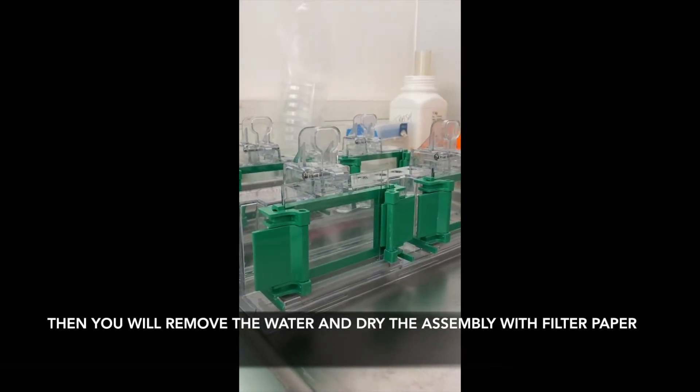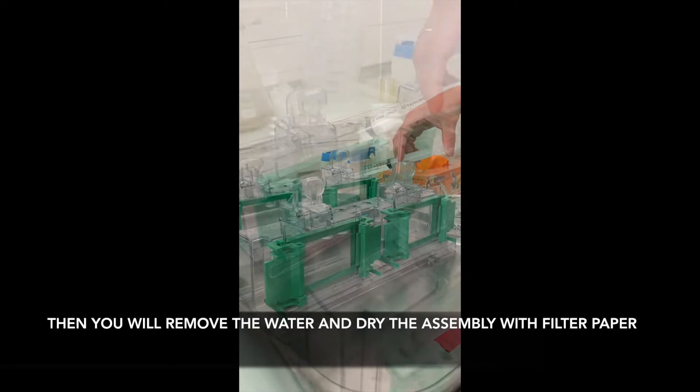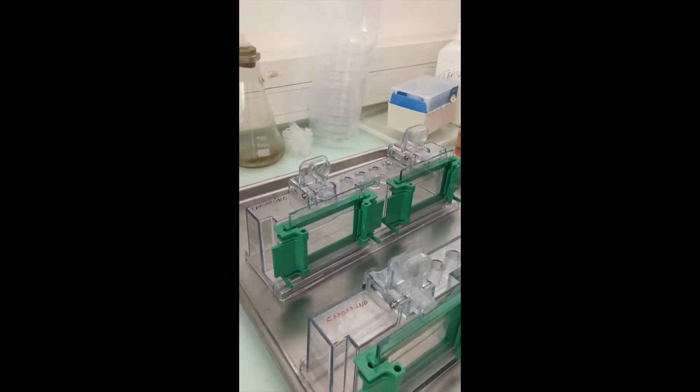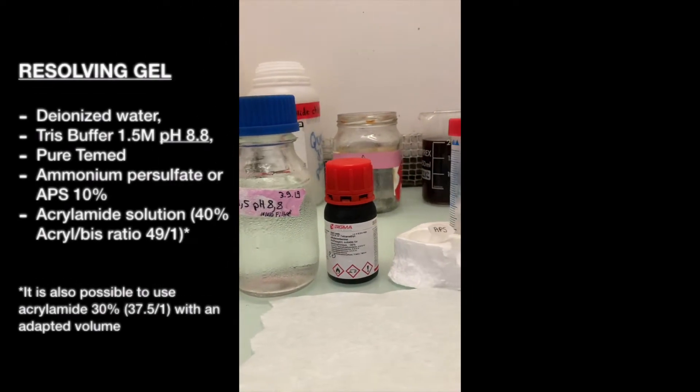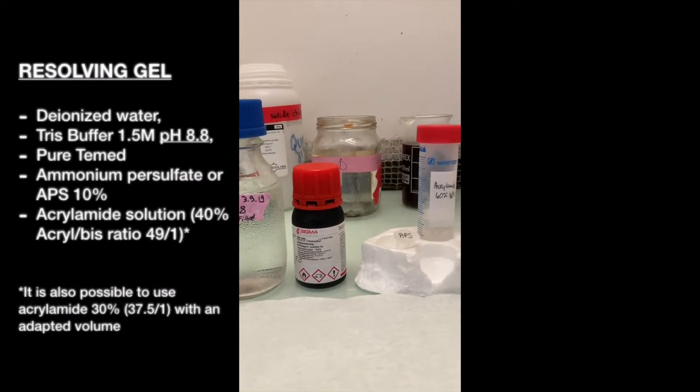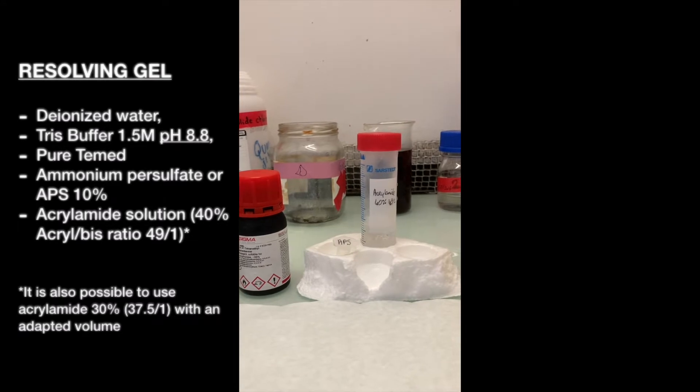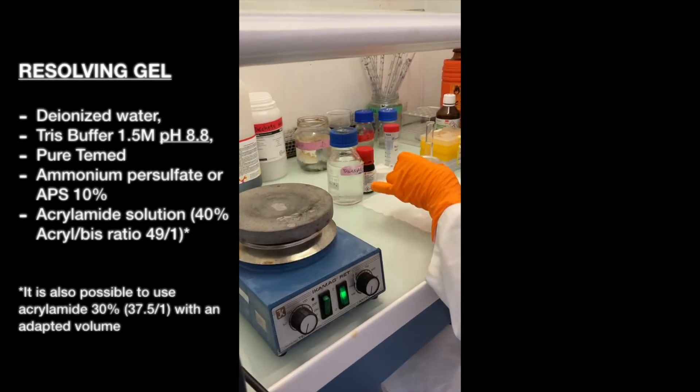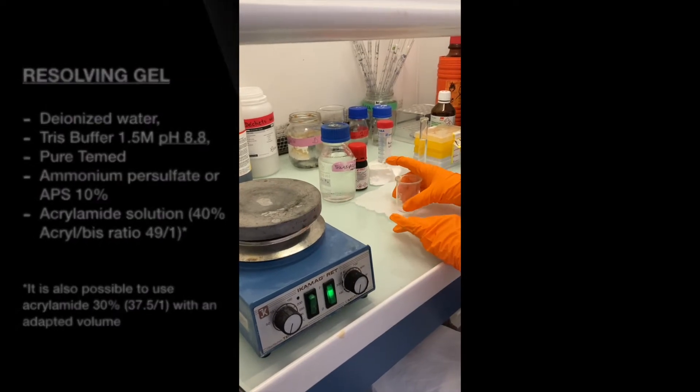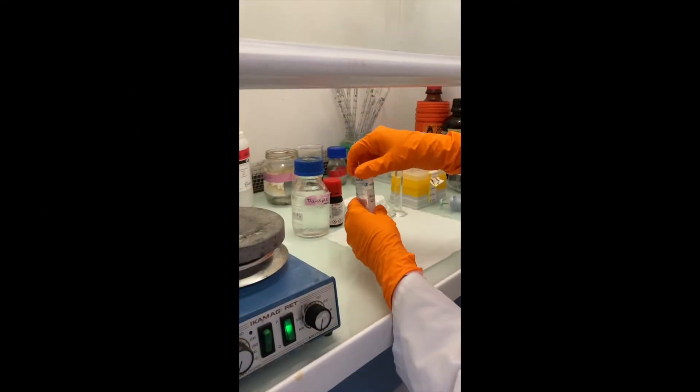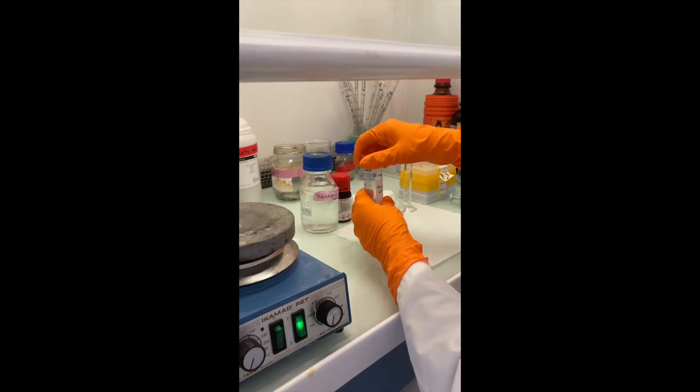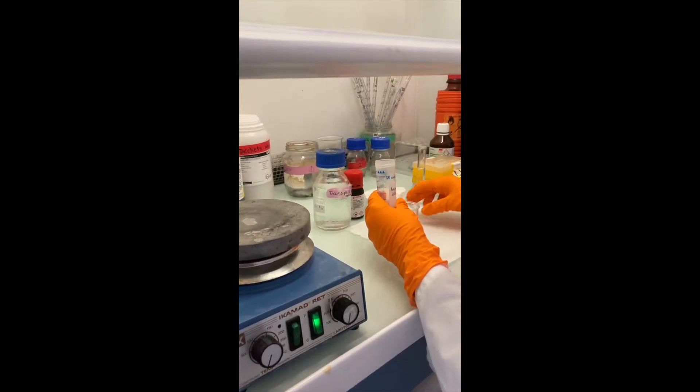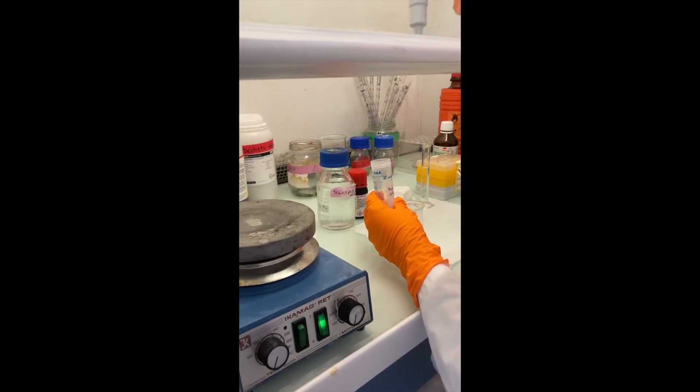Then prepare your resolving gel. For this step you will need some water, tris buffer 1.5 molar pH 8.8, pure TEMED, 10% ammonium persulfate or APS, and acrylamide solution, in this case 40% ratio 49:1. It also works with 30% acrylamide ratio 37.5:1 with an adapted volume.